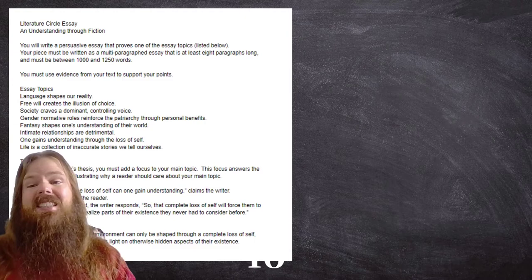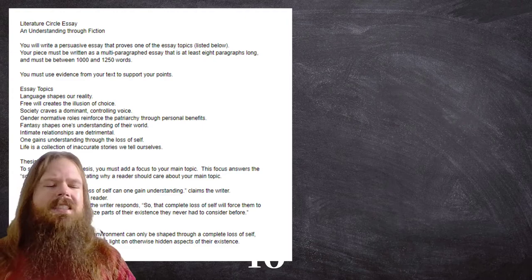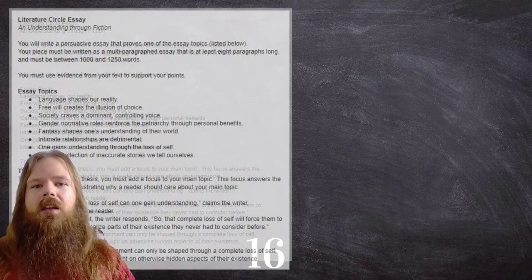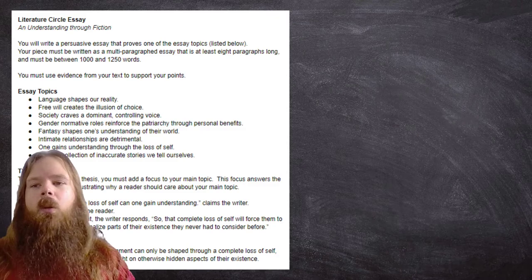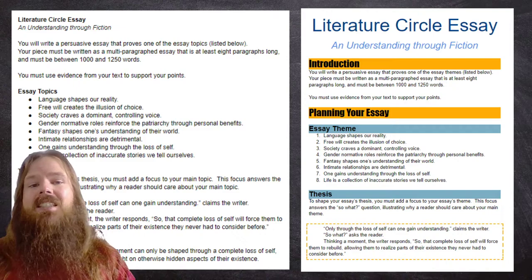Here is an assignment — a literacy circle essay assignment. You can see this and think, well, this isn't that bad. It's chunked; I can see thesis, thesis example, essay topics — all that stuff is there. Then there are some bullet points, some bold text, some italics. It can't possibly get any better than this, can it? But I would say, yes, it still can.